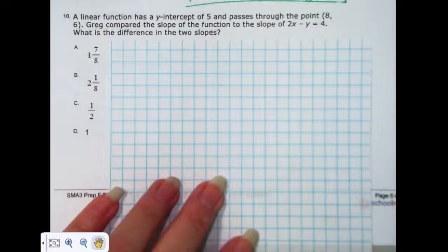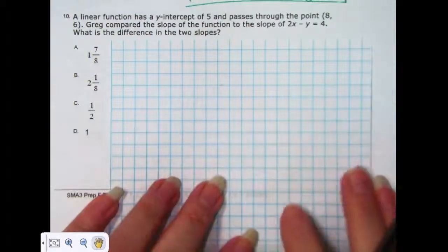A linear function has a y-intercept of 5 and passes through the point 8, 6. Greg compared the slope of the function to the slope of 2x minus y equals 4. What is the difference in the two slopes?